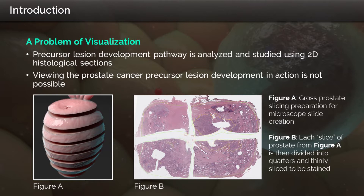Precursor lesion development is studied through 2D sections in microscope slides. The prostate is sliced into several sections and further prepared for histological analysis. Viewing the formation of this multi-dimensional development process through microscope slides is challenging, as it is impossible to see the pathway in action. Even with all the different modalities of studying the prostate, most of what we know is largely attributed by looking at still sections. Figure A displays the slicing process to create sections of prostate tissue, further prepared in Figure B to become a histological slide. This limits researchers to only portraying 2D data when presenting new findings.